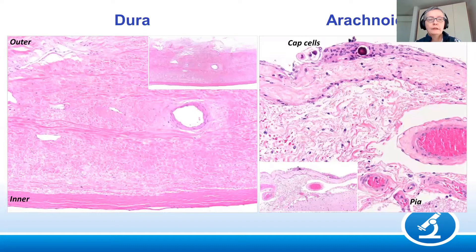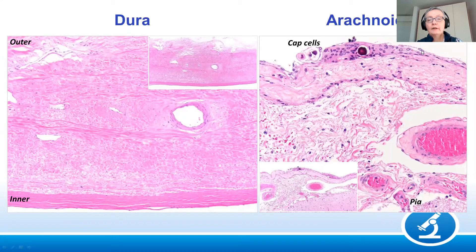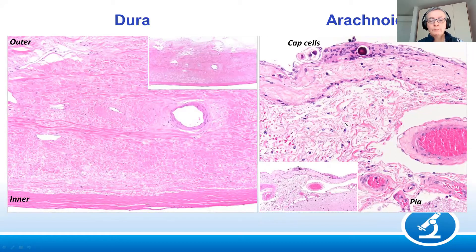When we look at these membranes, we need to remember how they look when normal. The dura is almost an acellular fibrous membrane, with a slightly denser inner layer and vessels generally closer to the outer dura. The arachnoid is a loose membrane with arachnoidal cap cells on top, which can form little nests and even small calcifications — psammoma bodies. The pia is a very thin layer in direct contact with the brain. Throughout these membranes, there are vessels.